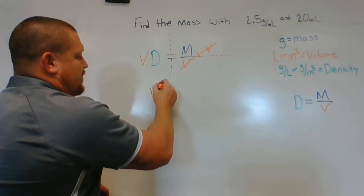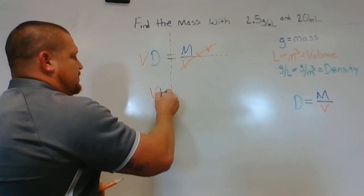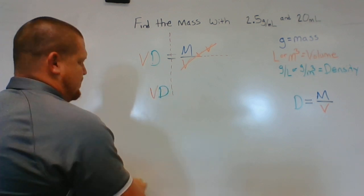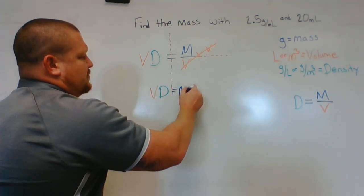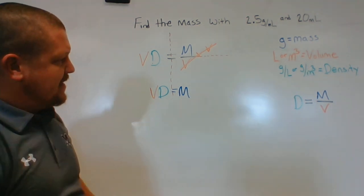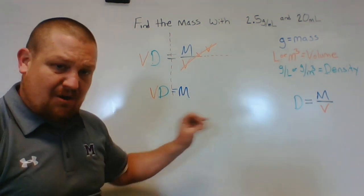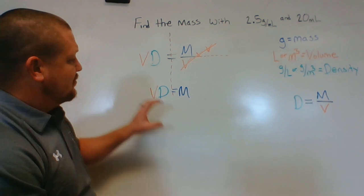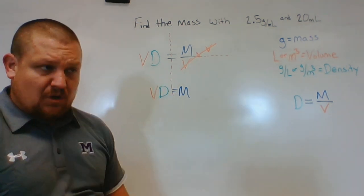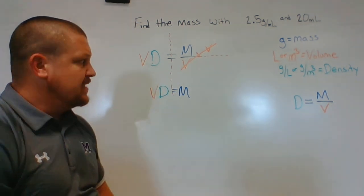So now we're going to be left with volume times density equals mass. Now we have our mass isolated on one side of the equation. So if we plug in a volume and a density, multiply those together, we get our mass. That's what we're going to do now.